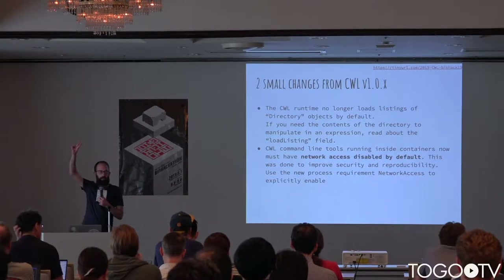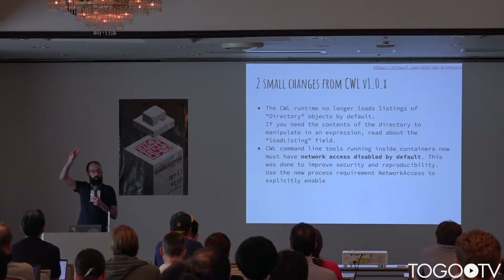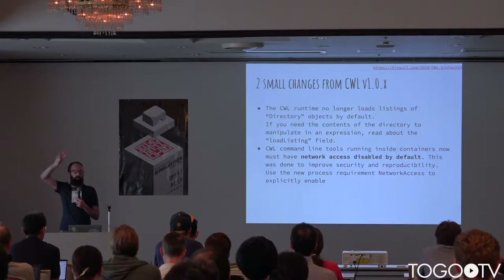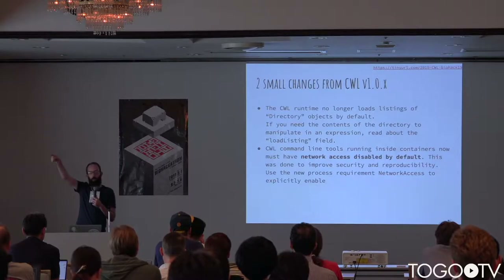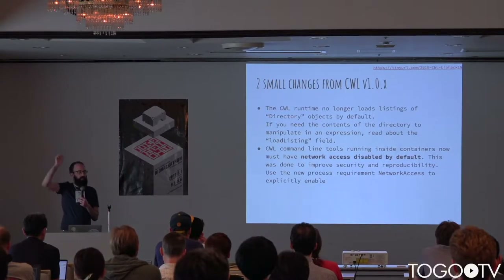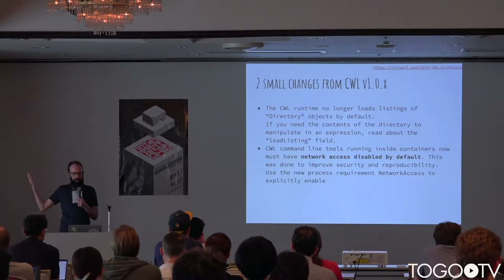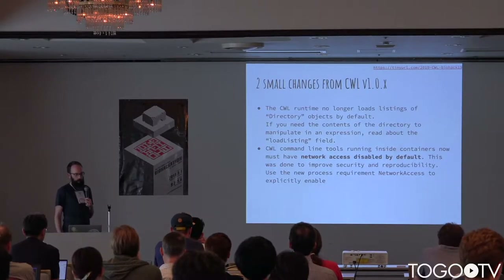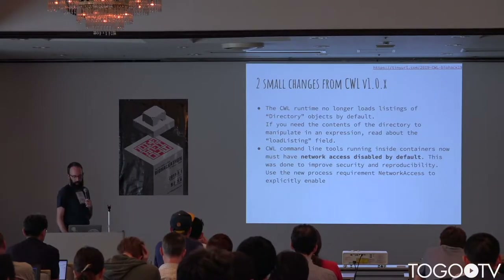There are two changes we made that you might say should never be backwards-incompatible. The good news is our upgrader handles them — these are changes in default behavior. Our upgrader from 1.0 to 1.1 will put the changes in so they don't bother you. But if you're writing 1.1 syntax from scratch, you will need to know about these two changes: the contents of a directory object are not included by default unless you ask for them, and the network access change I mentioned.